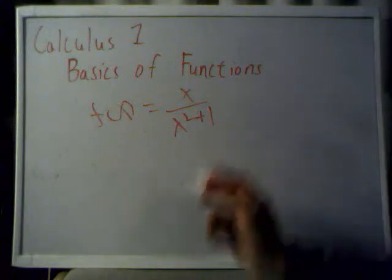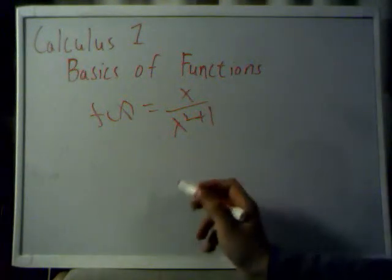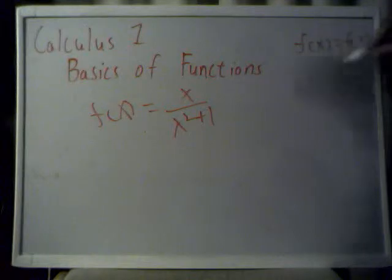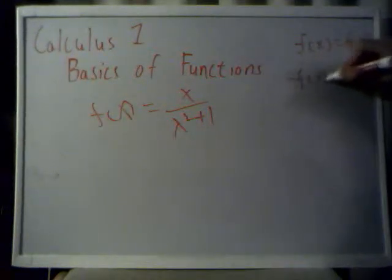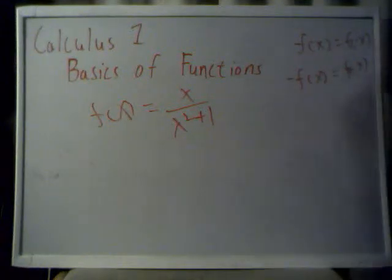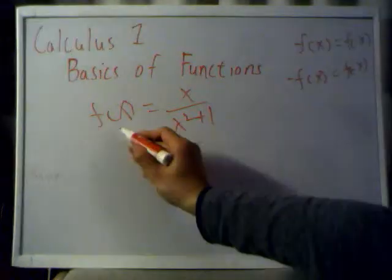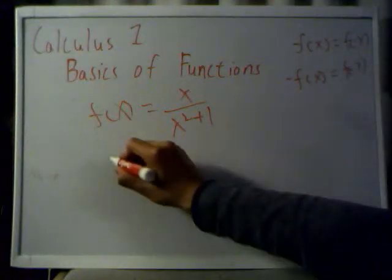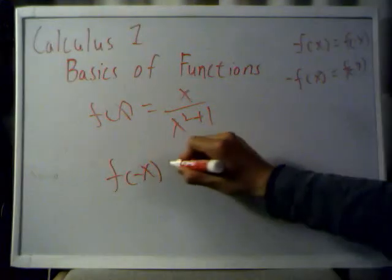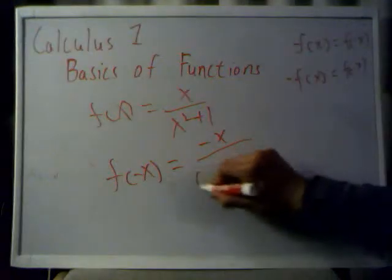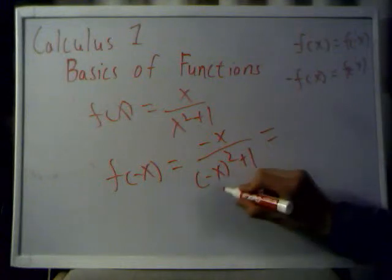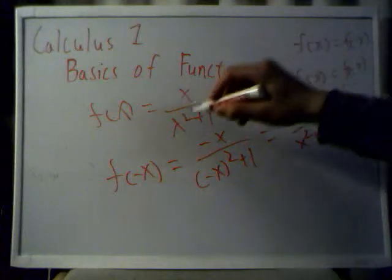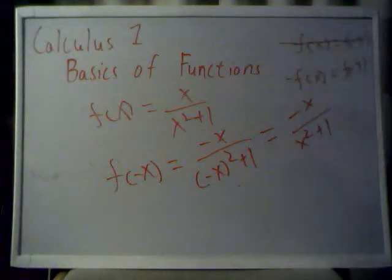By just looking at this, it's not that easy to tell if it's even or odd. But if we know that for an even function f of x is equal to f of negative x, and then for an odd function negative f of x is equal to f of negative x, this is easy to figure out. Remember from the first video, you can simply change what's in your parentheses. So we'll plug in f of negative x: that becomes negative x over negative x squared plus 1. Since this is squared, it becomes positive, so you get negative x over x squared plus 1. Clearly these are not equal, so this is obviously not an even function.